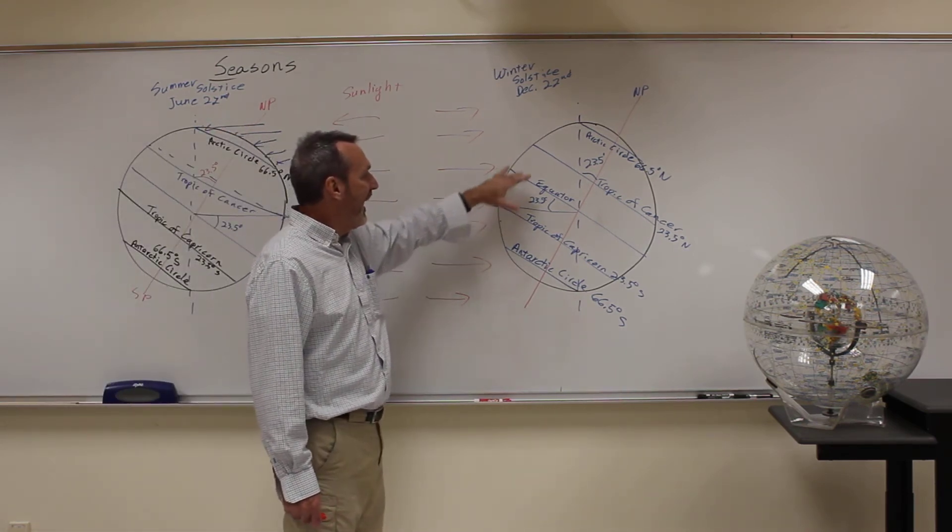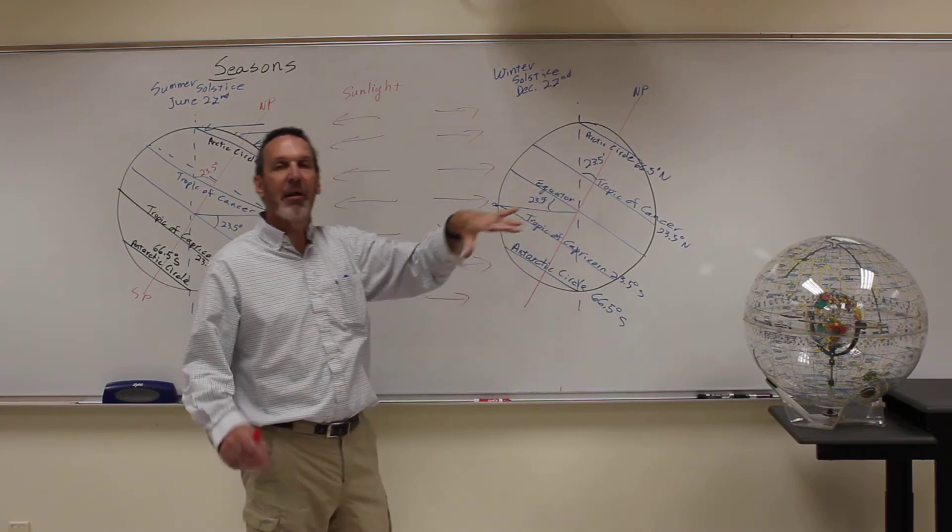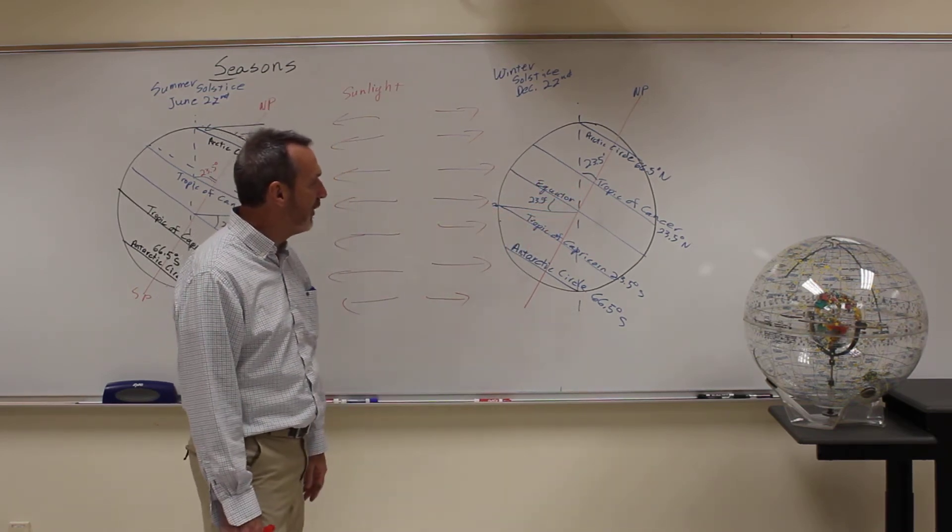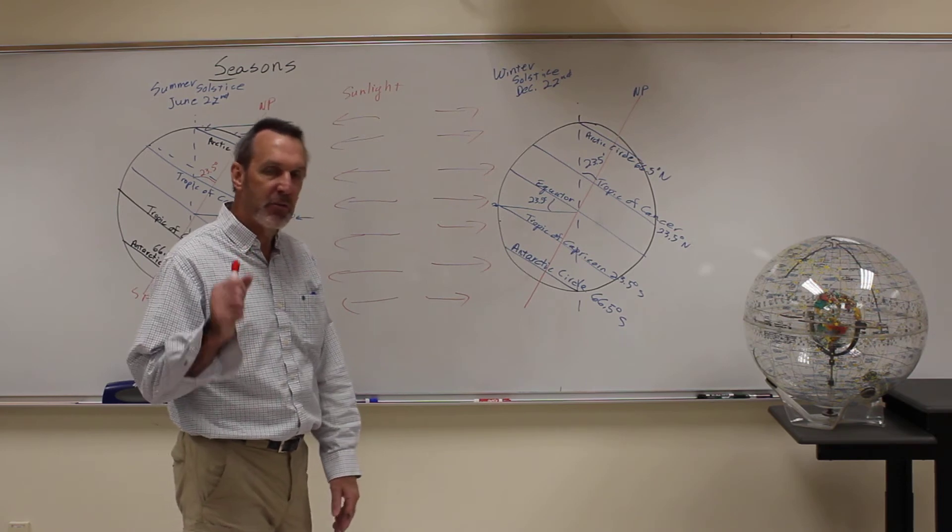So anybody outside of that, anybody that has a latitude greater than 23 and a half in the northern hemisphere, will never have the Sun directly overhead.